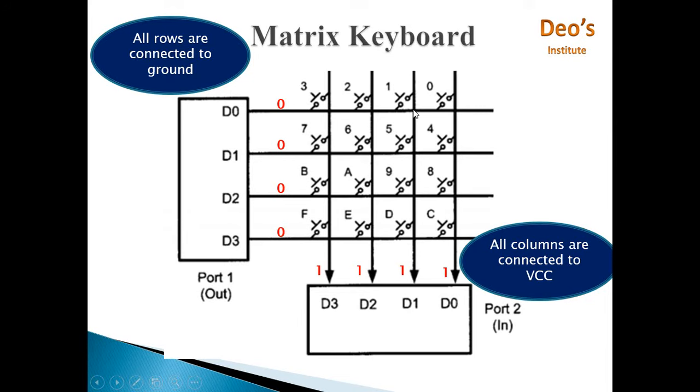Because of this high ground connection, this D1 input becomes 0. So to identify whether key is pressed or not, we will continuously check for these values on port 2.